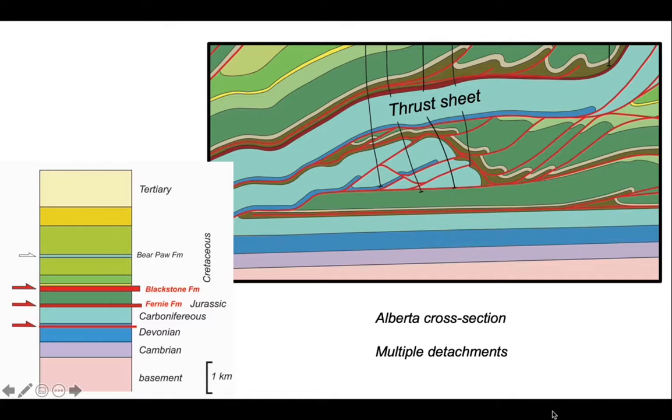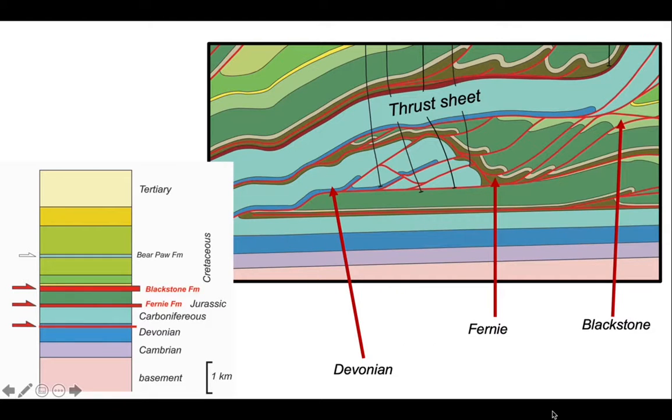Let's zoom into that part we looked at originally. The multiple detachments active in here: one towards the top of the Devonian, one in the Jurassic Fernie formation, and one within the Blackstone formation. And we can see that the thrusts are combining and recombining in these horizons. They act as collection points for thrust displacement.